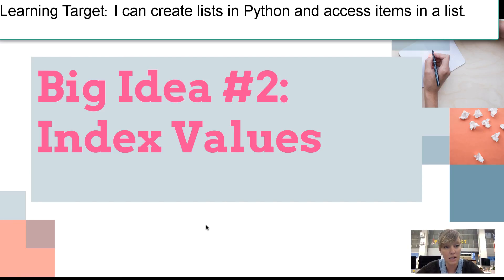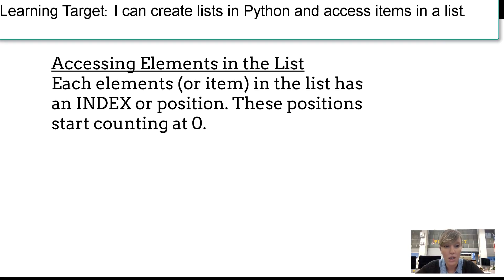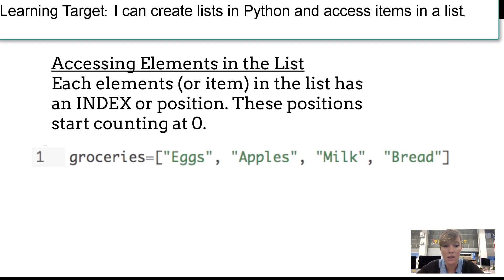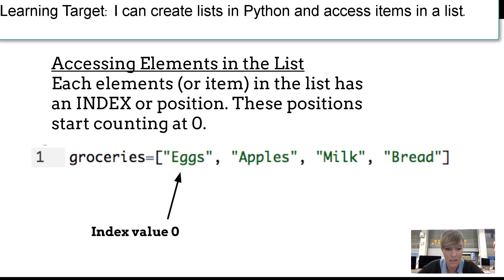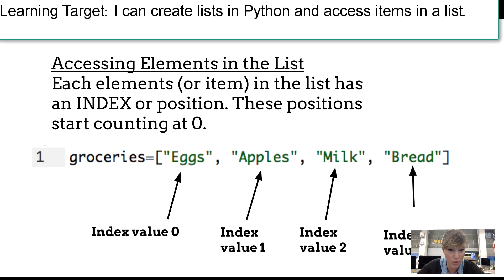The second big idea is index values. When you have a list, each item has an index or a position. Normally you'd say first, second, third, fourth item, but the computer starts counting at zero. So the first string in the list 'groceries,' eggs, has an index value of zero. Apples is one, milk is two, and bread is three. It starts counting at zero, not at one.